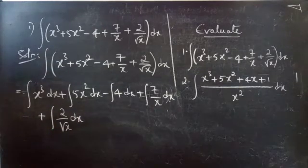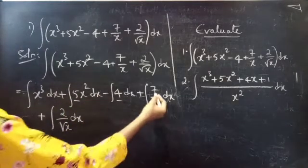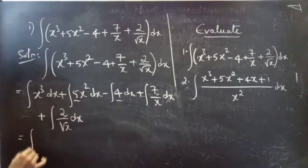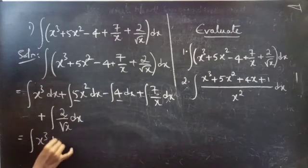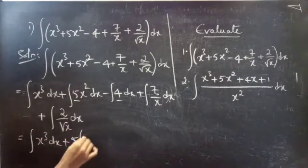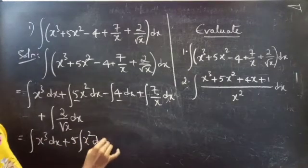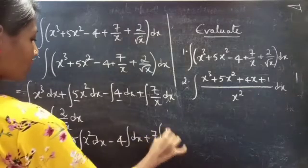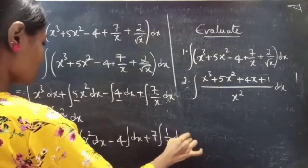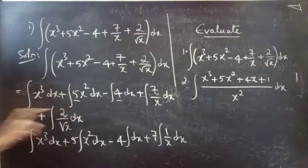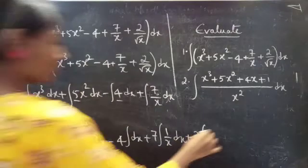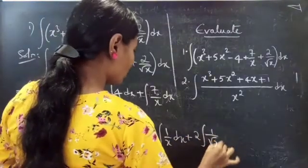Take the constants outside the integral. Here 4 is a constant, 7 is a constant, 2 is a constant. So this equals: integral x cubed dx plus 5 times integral x squared dx minus 4 integral dx plus 7 times integral 1 by x dx plus 2 integral 1 by root x dx.